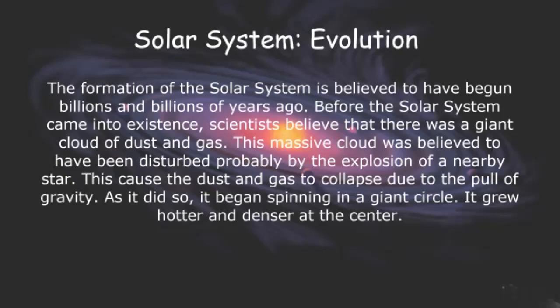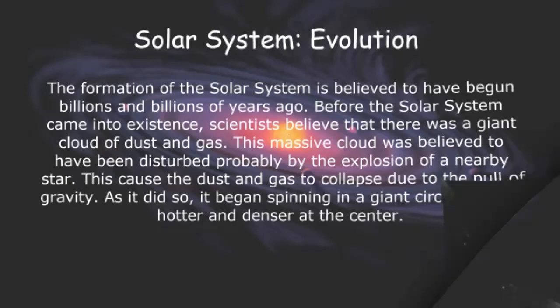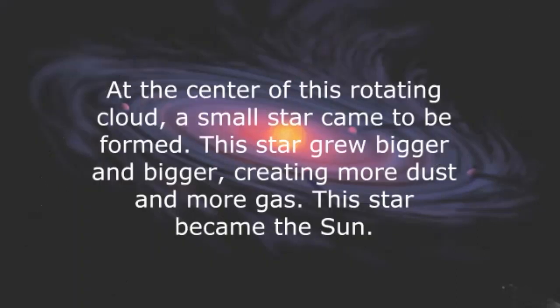At the back you can see the image — it is rotating because of gravity, and at the center there is something very hot and very dense. At the center of this rotating cloud, a small star came to be formed. This star grew bigger and bigger, creating more dust and more gas. This star became the sun.